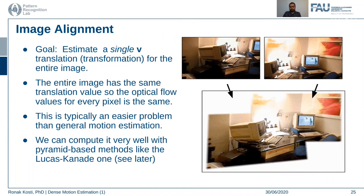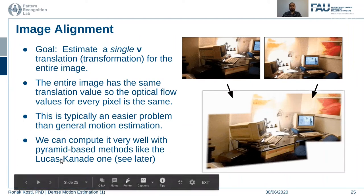One application of motion estimation is image alignment, where the aim is to align two different images of the same scene captured from different perspectives. We want to generate a single translation vector for the entire image. The assumption here is that the entire image has the same translation value, so the optical flow values are the same for every pixel. This is an easier problem to solve than general motion estimation, and using Lucas-Kanade methods we can easily compute this kind of image alignment.